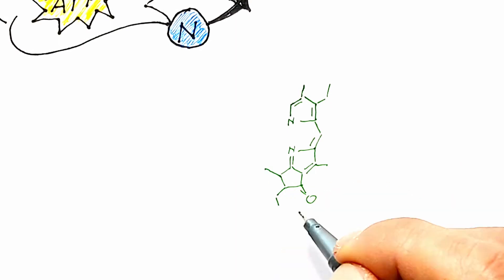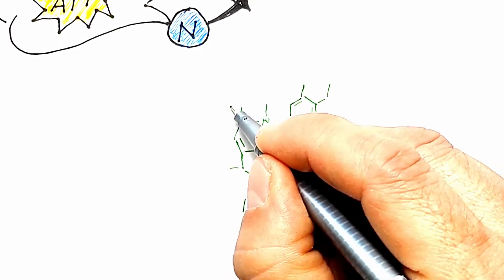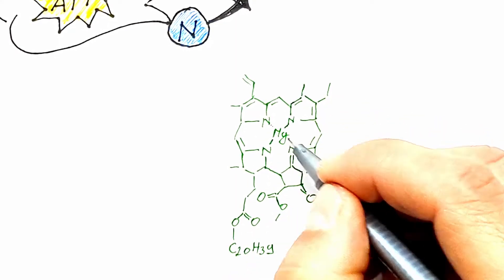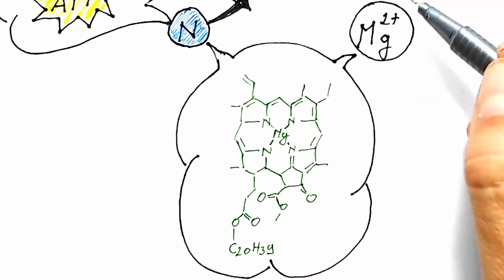Furthermore, for the production of chlorophyll, the main pigment for the absorption of light during photosynthesis, in addition to nitrogen, plants need magnesium.